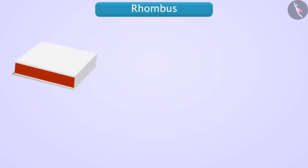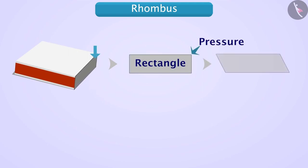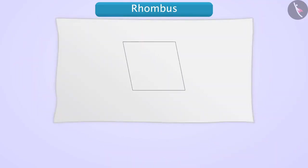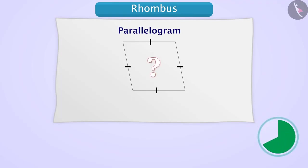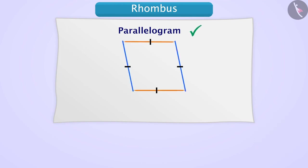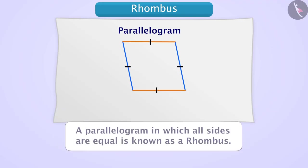Now let us understand the rhombus. We have seen that if we take out the matchbox tray and apply pressure on one of its open sides, a parallelogram is formed. Just think that if all sides of the open part are equal, then also it will be called a parallelogram, because its opposite sides are parallel. Though this is a parallelogram, all of its sides are equal. A parallelogram in which all sides are equal is known as a rhombus.